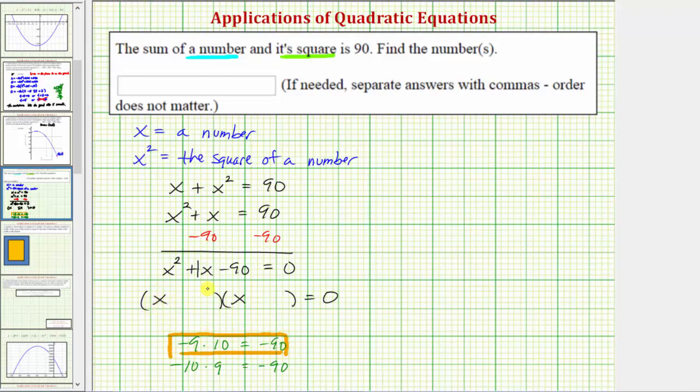So one factor would be x minus nine, the other factor would be x plus 10. And now because this product is equal to zero, either x minus nine equals zero or x plus 10 equals zero.